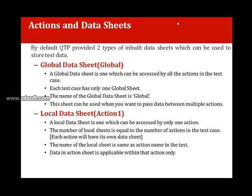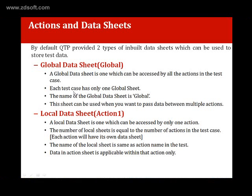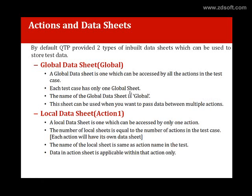For example, if you have a test case with three actions — login, create record, and log out — when you load that test, three different action sheets will be created in the data table with the respective names. If you name an action 'login', that action sheet will be renamed as 'login'. The global data sheet is accessible by all actions in the test case, and each test case has only one global sheet. But the count of action sheets increases as you add more actions to the test.